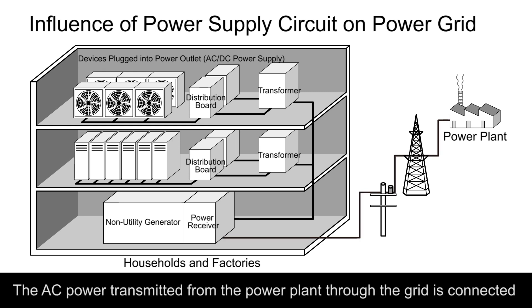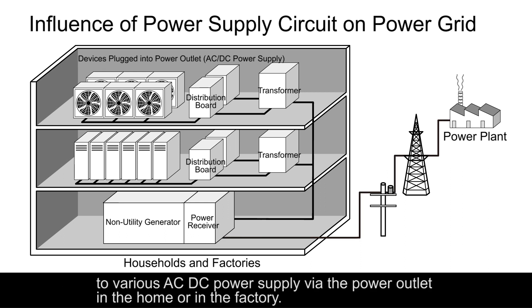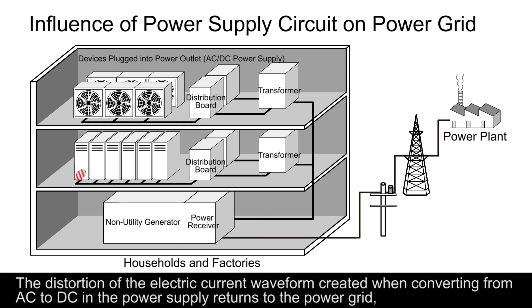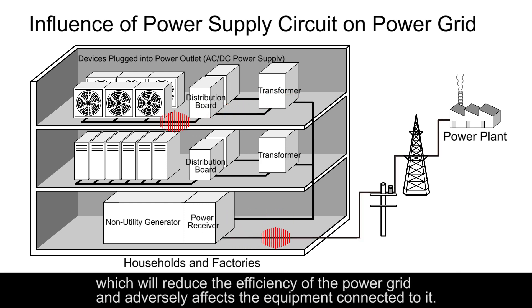The AC power transmitted from the power plant through the grid is connected to various AC-DC power supplies via the power outlet in the home or in the factory. The distortion of the electric current waveform created when converting from AC to DC in the power supply returns to the power grid, which will reduce the efficiency of the power grid and adversely affects the equipment connected to it.